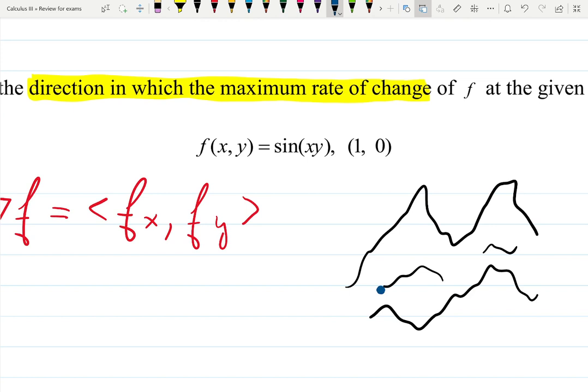If you were dropped over here, then what will be the maximum rate of change? Not only will the gradient tell you this is the maximum rate of change, but the size of the gradient will tell you how extreme the change is. That's the magnitude of the gradient vector.